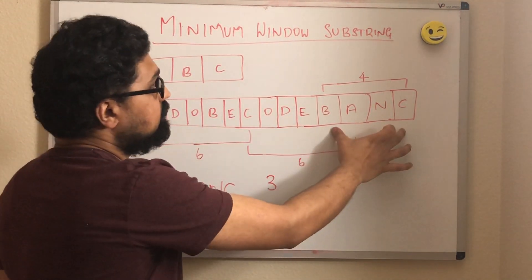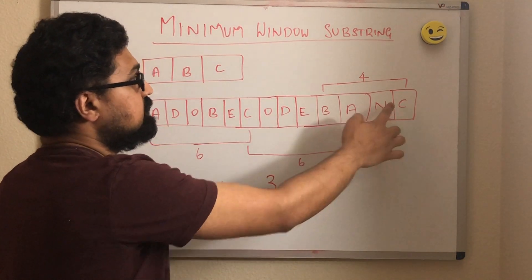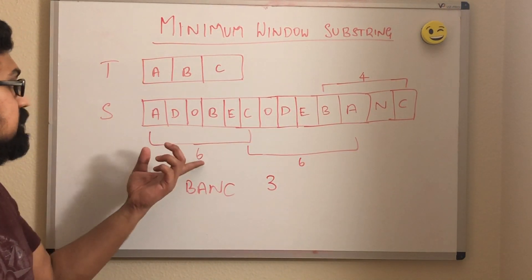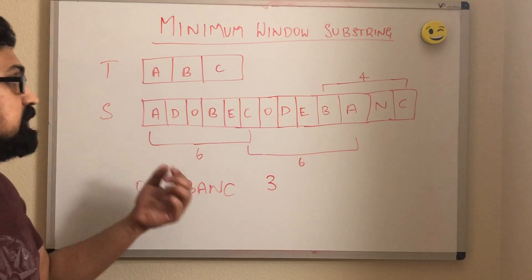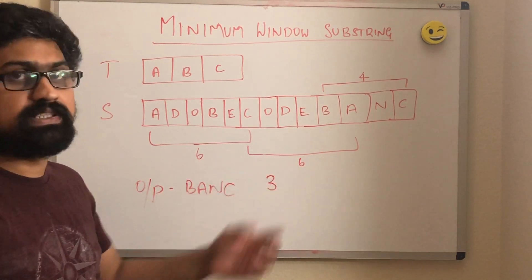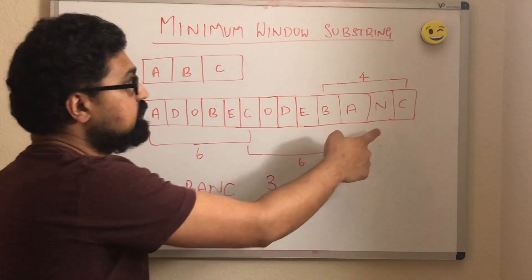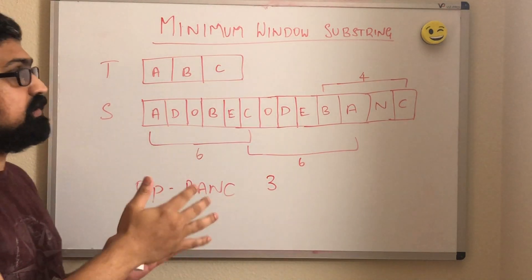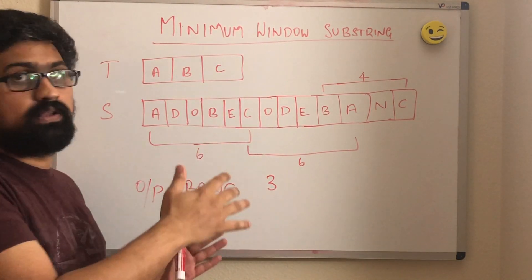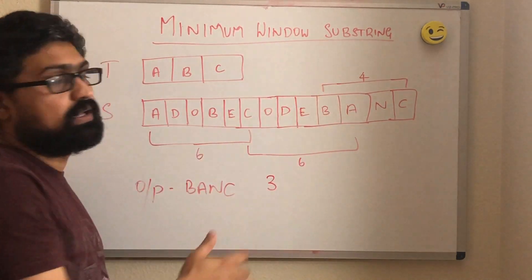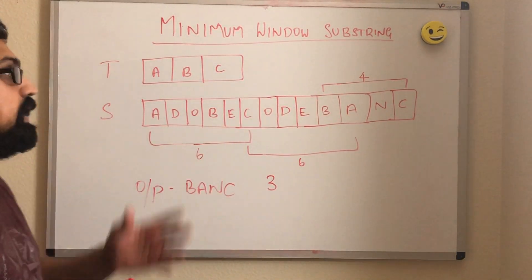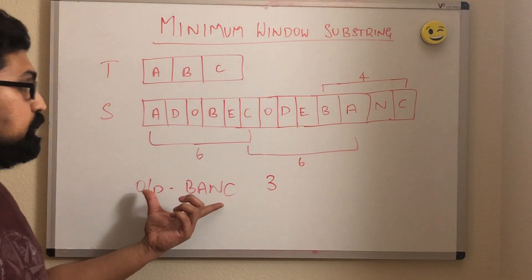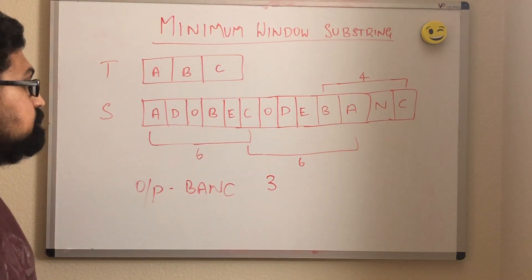If you take this window in s, we have the characters c, b, and a — that is all characters of t. If you take this window, we have the characters b, a, and c — again all characters of t. The length of this window is 6, the length of this window is also 6, and the length of this window is 4. So we have to find the window or the substring that has minimum length and also contains all characters of t. So the output is b, a, and c for this example.